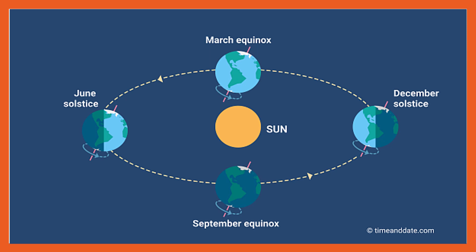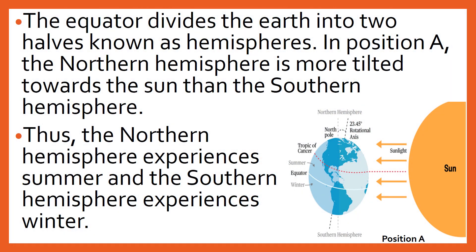Students, the earth's axis is always inclined in the same direction at an angle of 23.5 degrees to the vertical. This inclination of the earth's axis, together with the earth's revolution around the sun, causes seasons. The equator divides the earth into two halves, known as hemispheres. In position A, the northern hemisphere is more tilted towards the sun than the southern hemisphere. Thus, the northern hemisphere is hotter and experiences summer, while the southern hemisphere experiences winter.